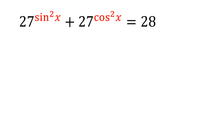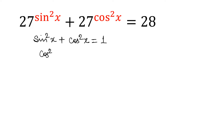I am going to start this question by using the identity sin²x + cos²x = 1. From this equation I can write cos²x is equal to 1 minus sin²x. So we put this value into the original equation.